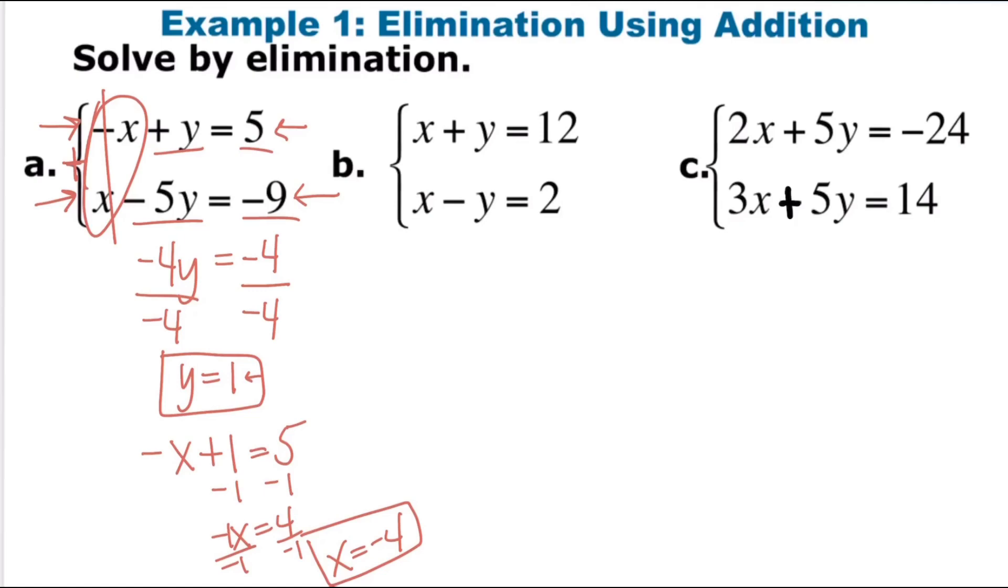Now you should be able to plug both of these in to both equations and they should work out to get you 5 and negative 9. Go ahead and check that. Our second one here, you might notice that our y's are the opposites. We have a positive and a negative, so those are going to cancel out. And then we have 1x and another x. So 2x equals 12 plus 2, 14. Solve for x by dividing, x is 7.